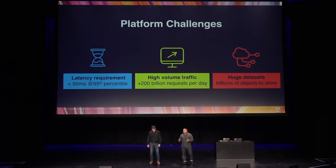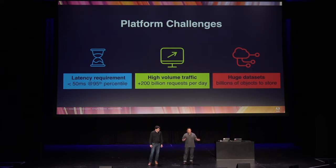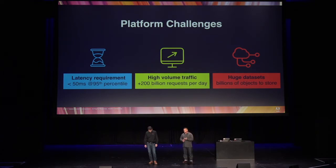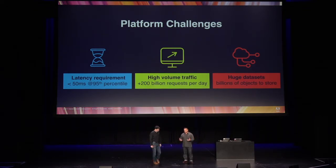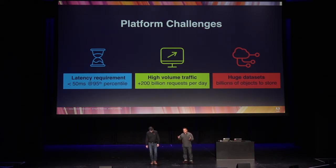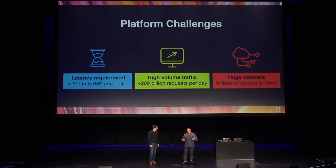As we started to grow, the scale went off the charts — we're now at 200 billion requests per day. On the Amazon platform, which is very mature with a plethora of options, for our very network-intensive use case it started to become a challenge as to whether we could scale on this platform without it eating into our business profits. We also had huge data sets — billions of objects we needed to move from A to B — and at a certain point you get into a 'Hotel California' situation where you have so much data it becomes very difficult to move out.